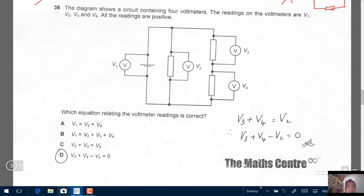36. The diagram shows a circuit containing 4 voltmeters. The readings of the voltmeters are V1, V2, V3, and V4. All the readings are positive. Which equation relating the voltmeter readings is correct?